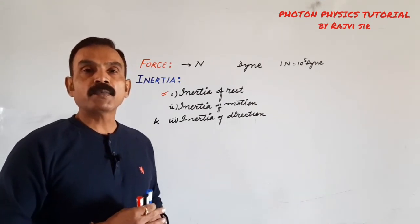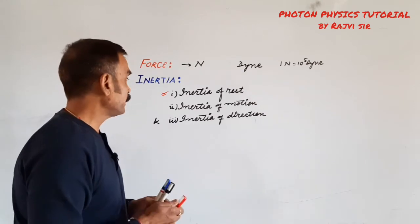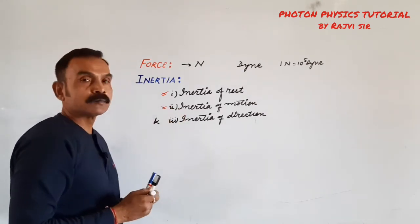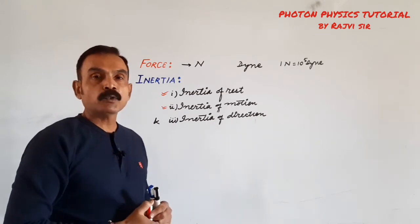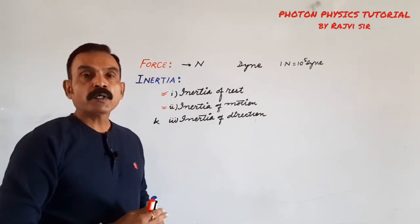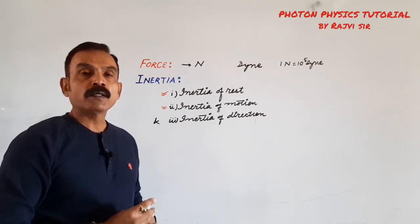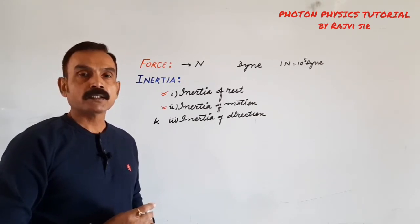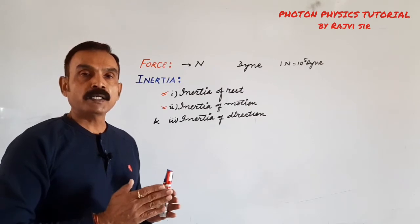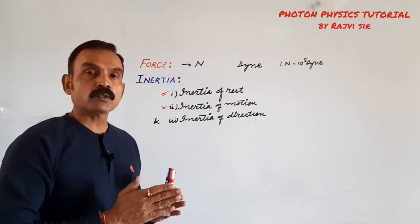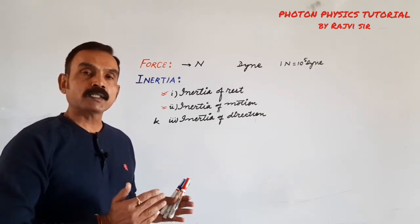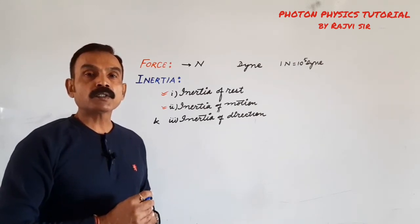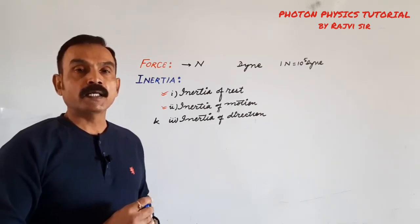Aise kai saare examples daily life mein hain. Now, inertia of motion: a body will remain in motion unless acted upon by an external agency. Agar wo motion mein hai, to usi direction mein, usi velocity se tab tak chalti rahegi jab tak uske upar koi force applied na kiya jaye. Ise hum inertia of motion kehte hain.